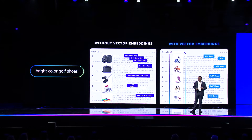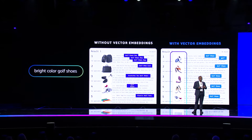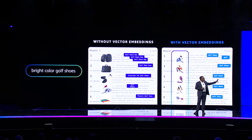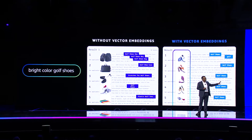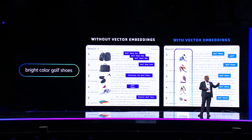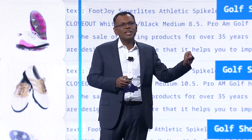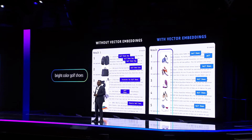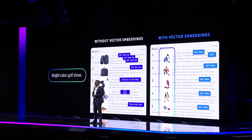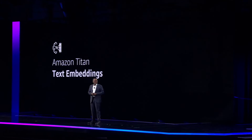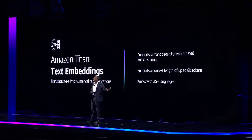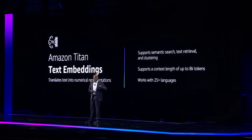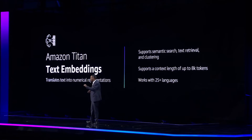In this scenario, the use of vector embeddings greatly enhances the accuracy of the query, like bright-colored gold shoes. We have used embeddings to support many aspects of our business, like Amazon.com. That's why we offer Titan Text Embeddings, which enables customers like AI company Grip Tape to easily translate their text data into vector embeddings for a variety of use cases.